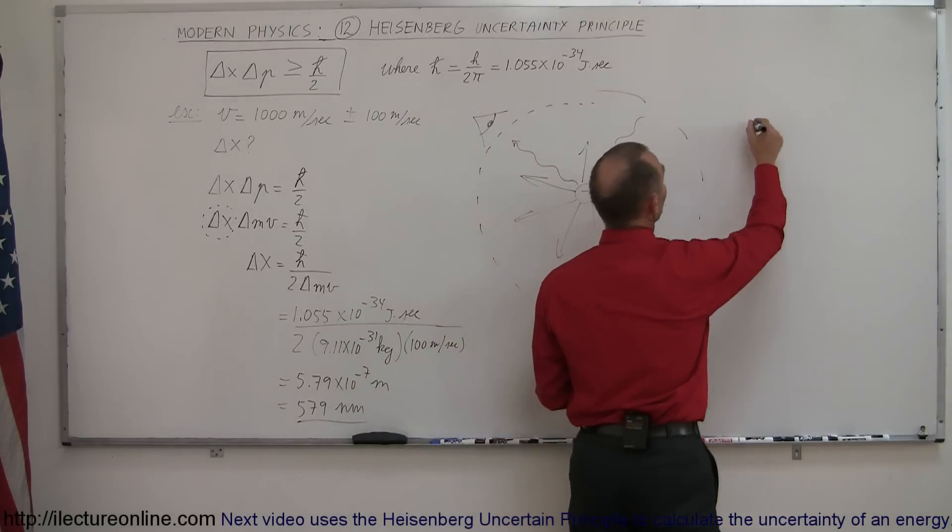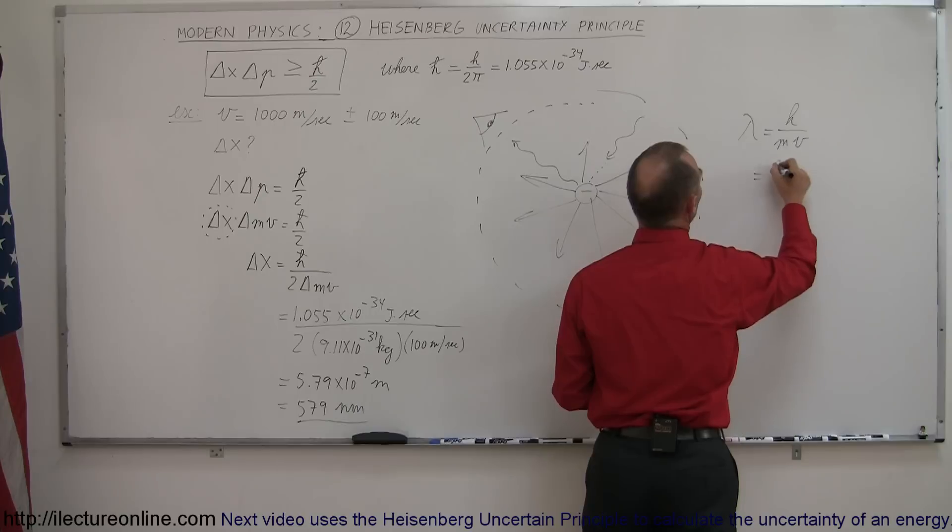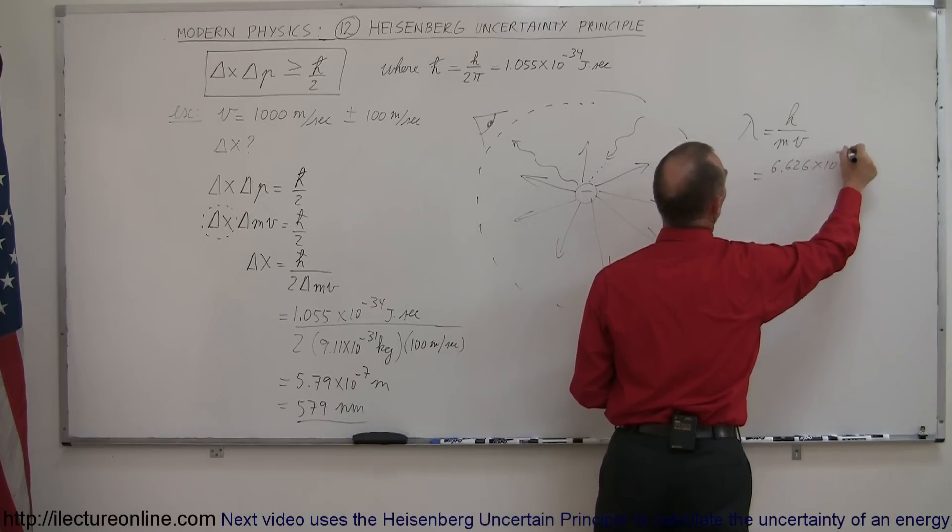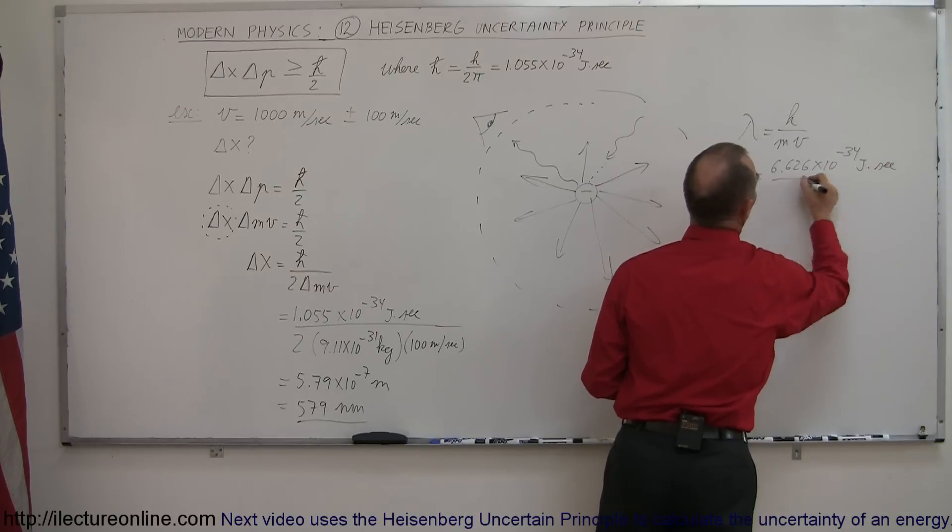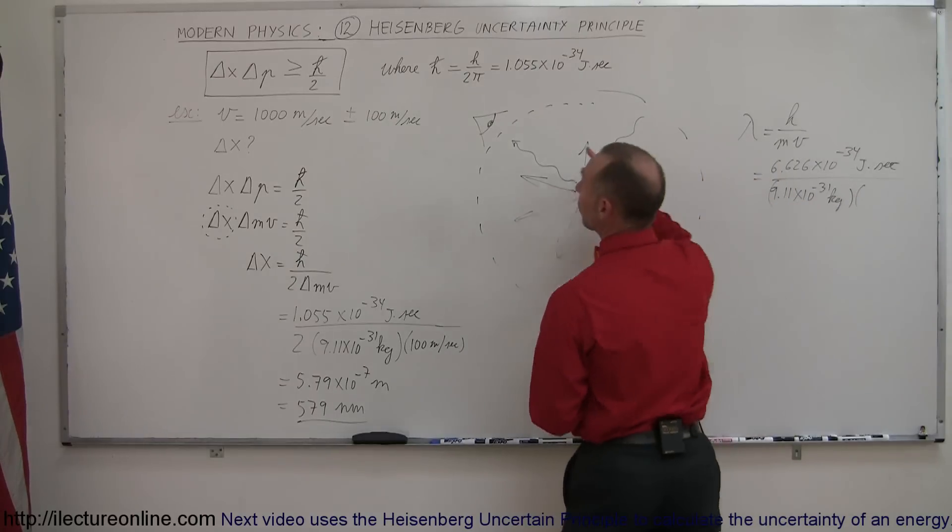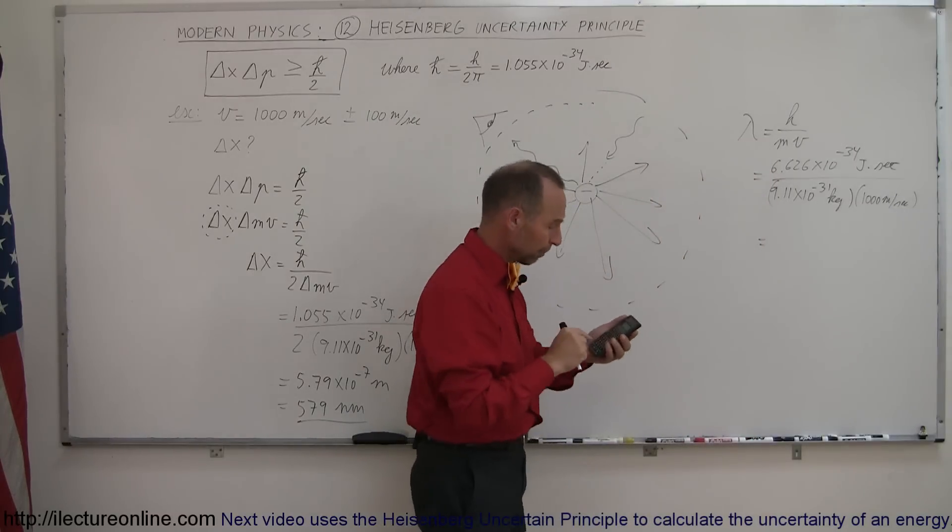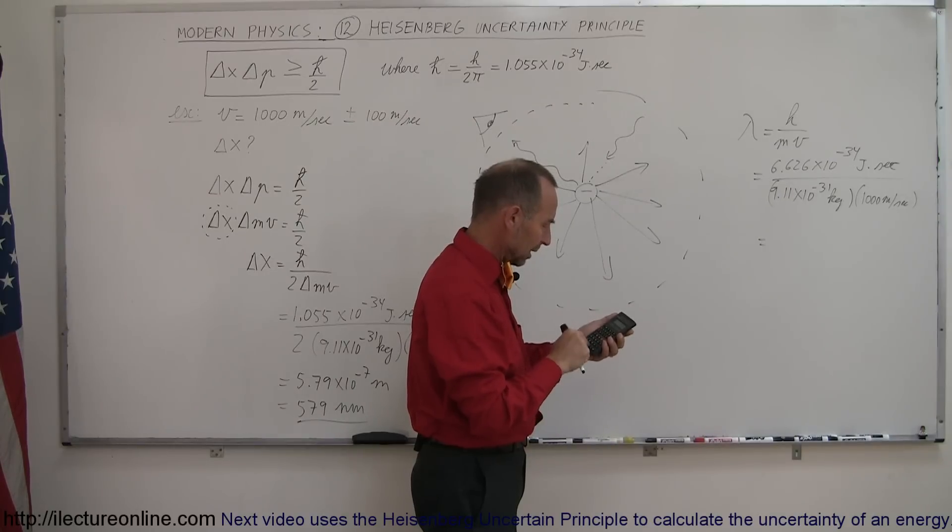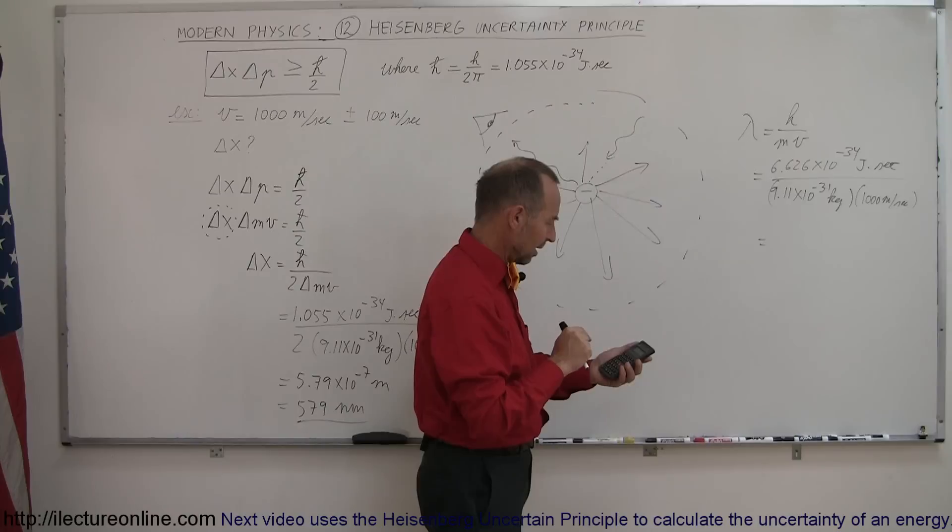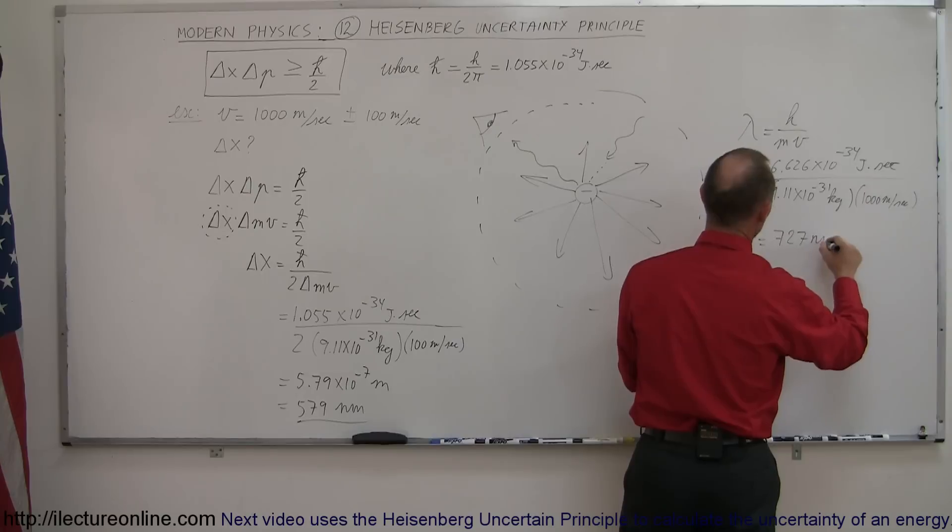The wavelength, lambda for an electron is equal to h, divided by m times v, so that would be equal to 6.626 times 10 to the minus 34 joules times seconds, divided by the mass, and multiply times the velocity, which we said was 1,000 meters per second. So 6.626 e to the minus 34, divided by 9.11 e to the 31 minus, and divide by 1,000, so we get a wavelength of 727 nanometers.